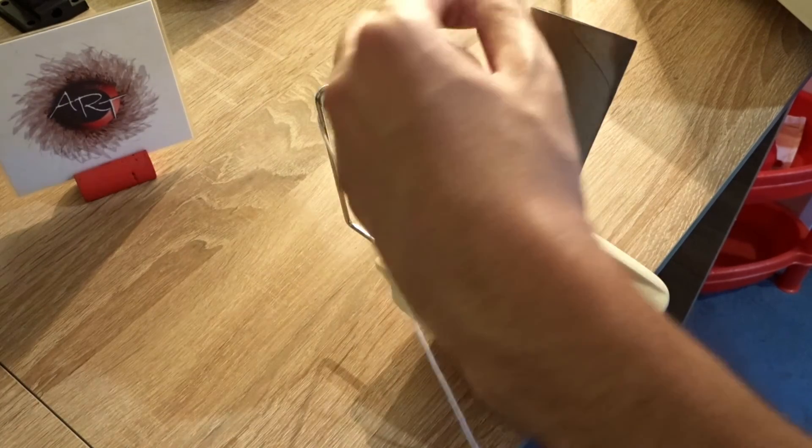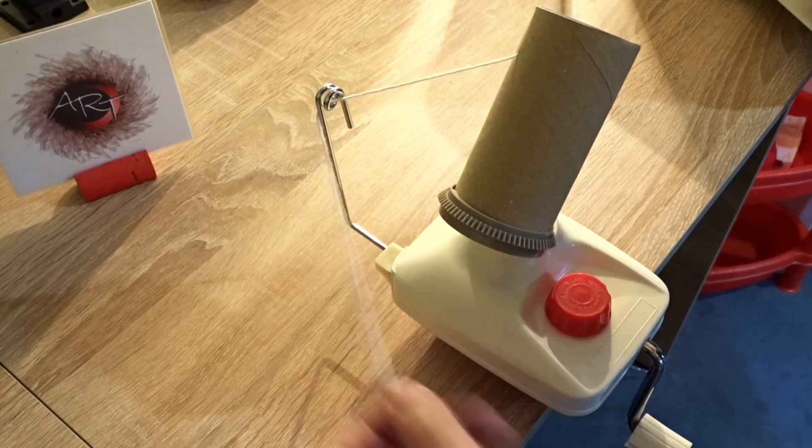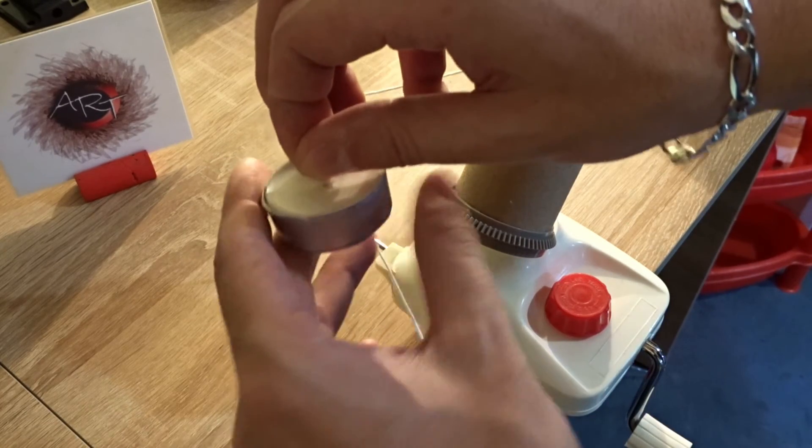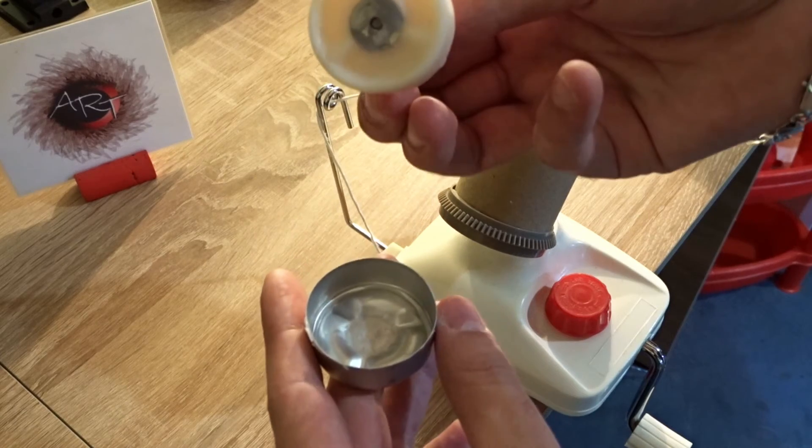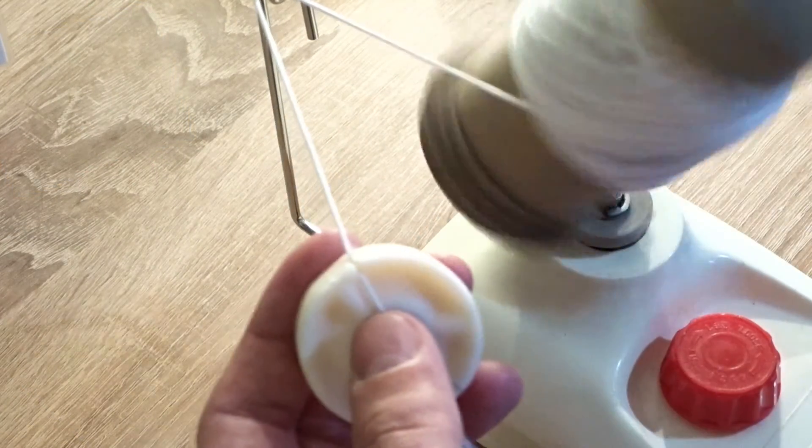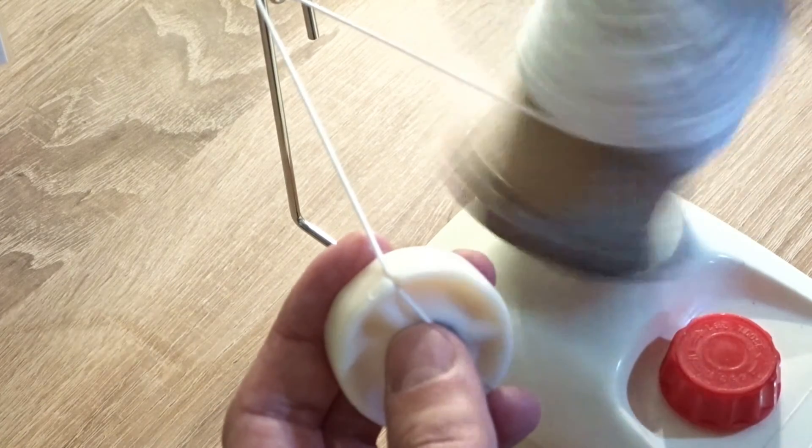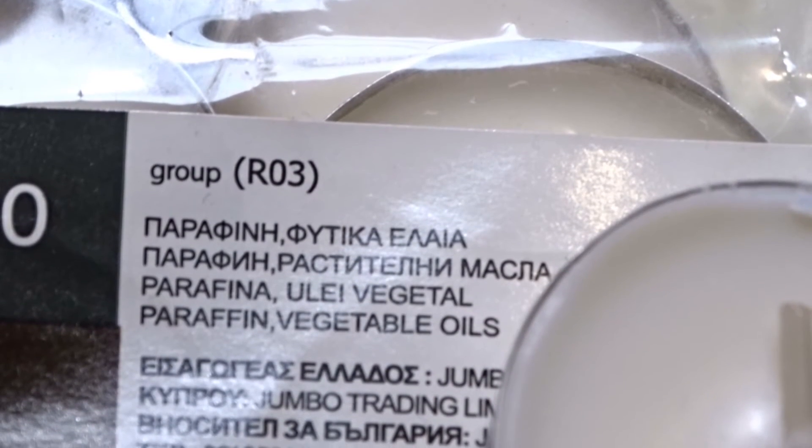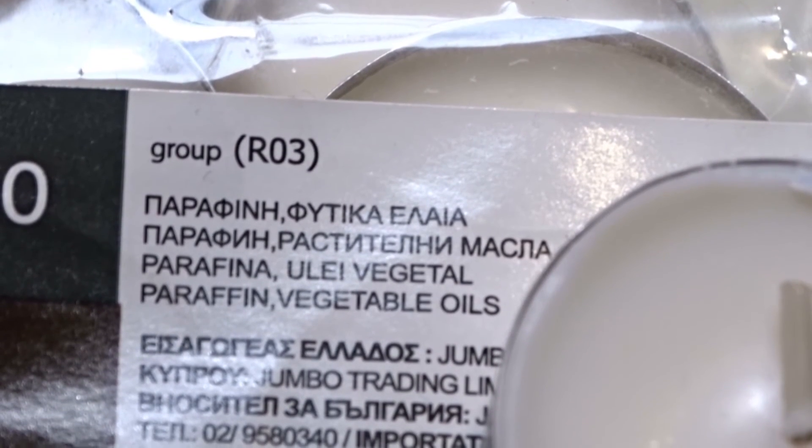If you don't have a paraffining device, you can use a tea candle and paraffin the yarn while winding it. Just make sure the candle is made from paraffin.